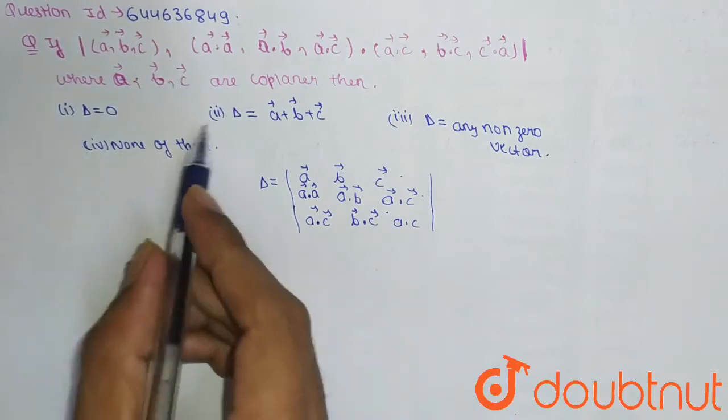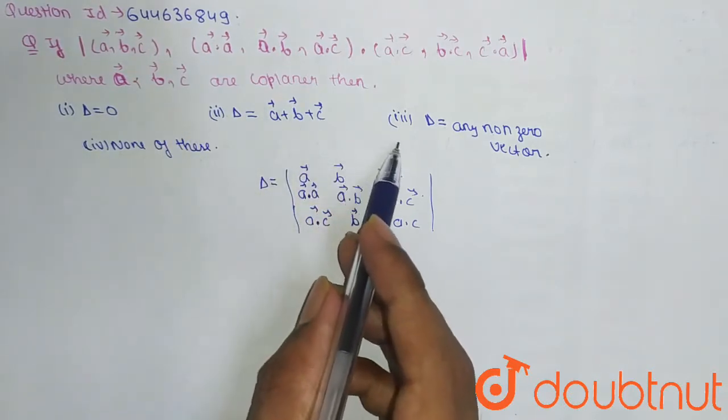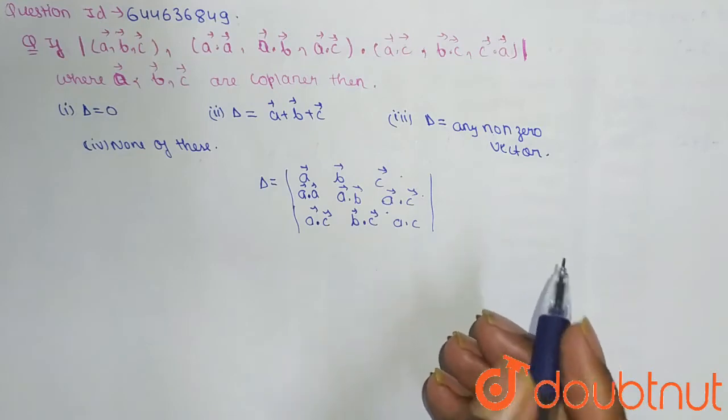We are given that A, B, C are coplanar. Then we have to find the value of Delta.